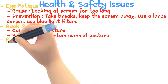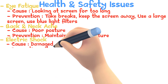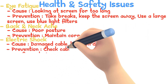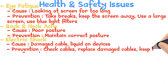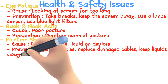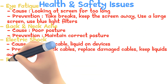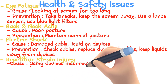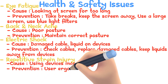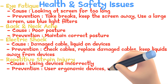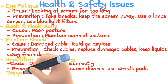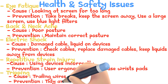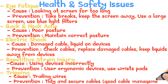Electric shock — cause: damaged cables or liquid on devices; prevention: check cables, replace any damaged cables, keep liquids away from devices. Repetitive strain injury — cause: using devices incorrectly; prevention: use ergonomic devices like wrist pads. Tripping on trailing wires — prevention: tidy and secure cables with good cable management.